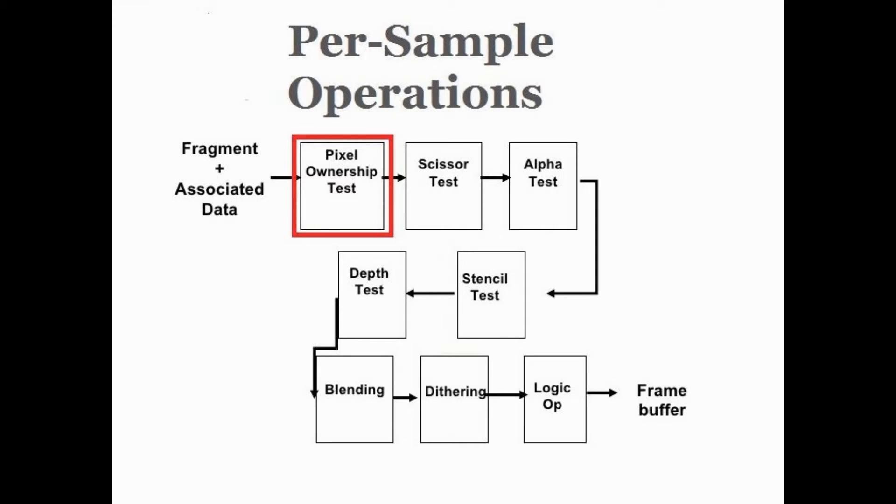The tests are: pixel ownership test, which fails if the fragment's pixel is not owned by OpenGL, if another window is overlapping with the GL window. Always passes when using a framebuffer object. Failure means that the pixel contains undefined values.